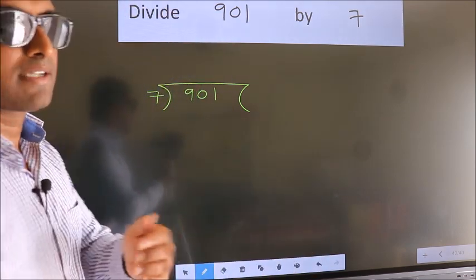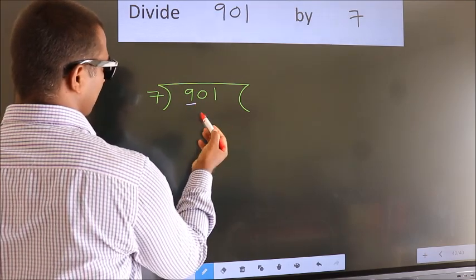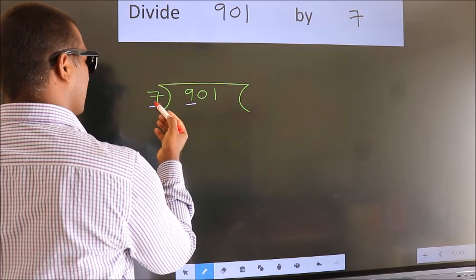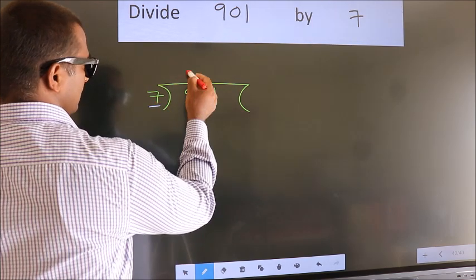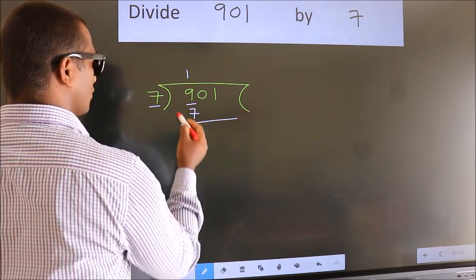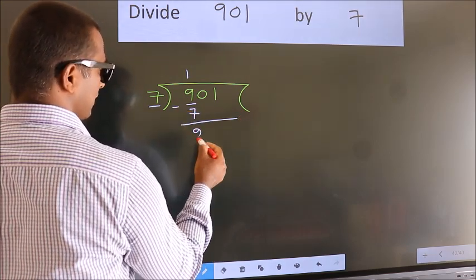Next. Here we have 9, here 7. A number close to 9 in 7 table is 7 once 7. Now we should subtract, we get 2.